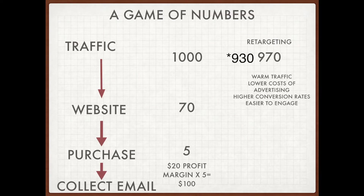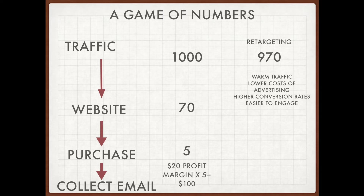Even though there's just a seven percent conversion rate on conservative estimates, that doesn't mean the 930 people who were not in that seven percent are useless. Those 930 people are considered warm traffic — they have lower cost of advertising, higher conversion rates, and are easier to engage. These 930 people who did not take action on the ad are still very valuable because they know about your brand and you can potentially re-advertise to them.